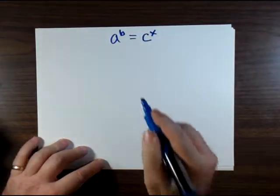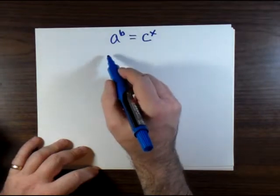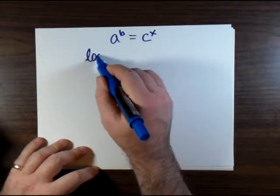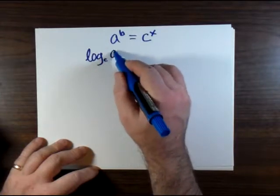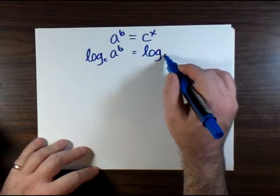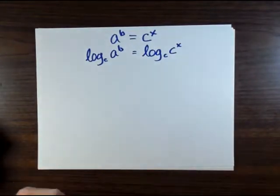Now, how about a situation where you have a to the b equals c to the x? Well, for that one, you simply have to take the log of both sides. If we're solving for x, that means you have to take the log of both sides because x is in the exponent. So there's no choice there.